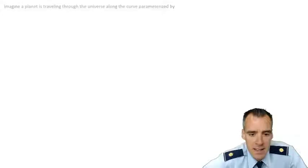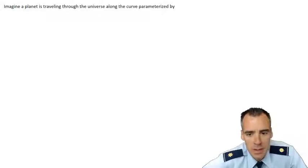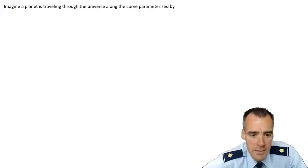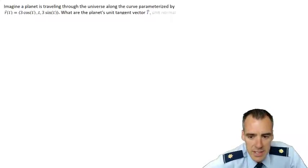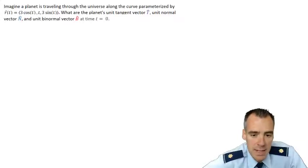Imagine a planet is traveling through the universe along a curve parameterized by this vector function. R of t is equal to the vector function 3 cosine of t, t, and 3 sine of t. What we want to do here is find the planet's unit tangent vector T, its unit normal vector N, and its unit binormal vector B at a given time, t equals 0.